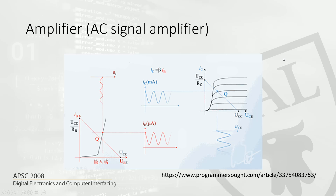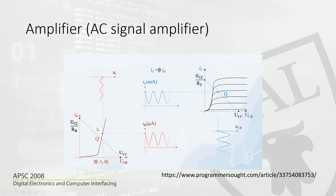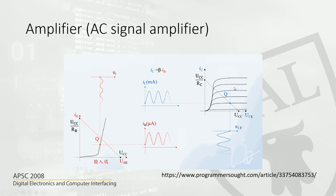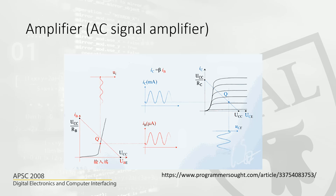Here is an example of how an amplifier works. The base is the input — we apply a small voltage, which is converted into base current. That small increase in base current is reflected as a larger collector current. The ratio of collector current to base current is called the gain of the amplifier. It is a constant value fixed for a particular transistor, and it is mentioned in the datasheet — usually somewhere between 100 to 300.